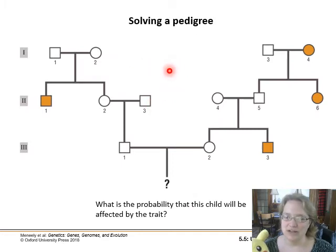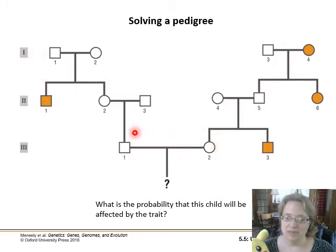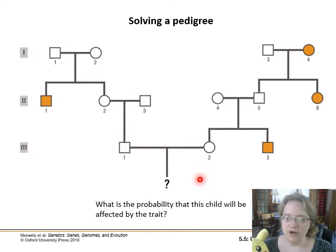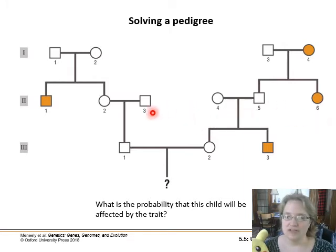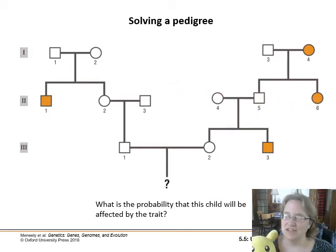Here we're going to try to solve a pedigree. We know information from three generations back, and we want to know about this particular cross between Roman numeral 3-1 and Roman numeral 3-2. What is the probability that the child will be affected by the genetic trait that's in both families? We're going to solve this like a puzzle — it's helpful to have these written out so you can mark them up and know who is what where.